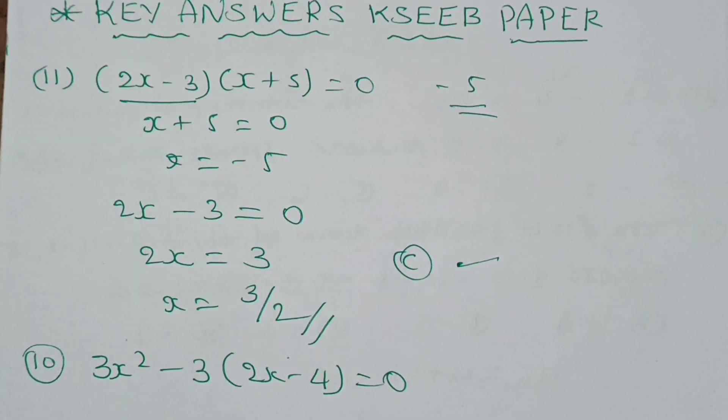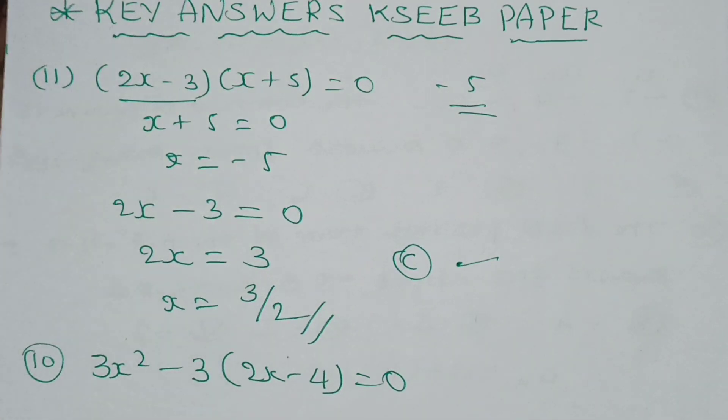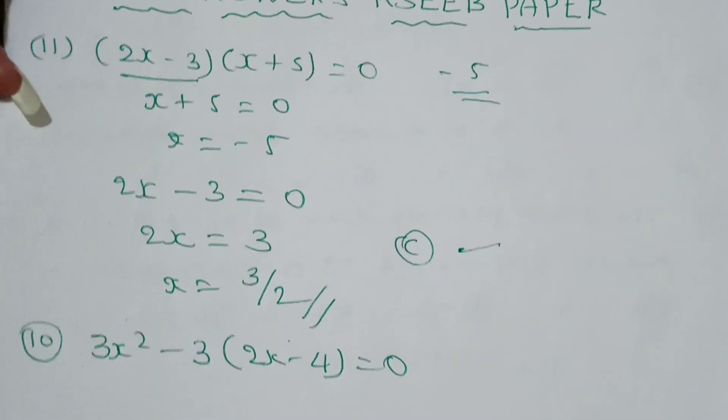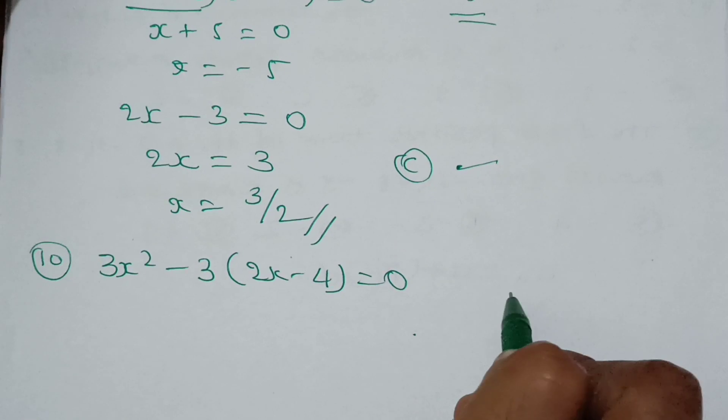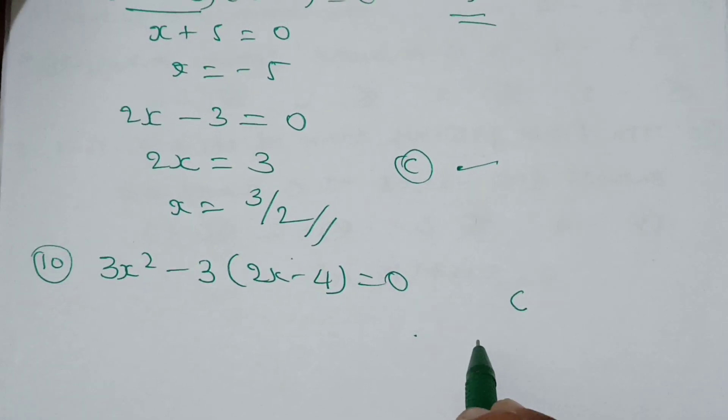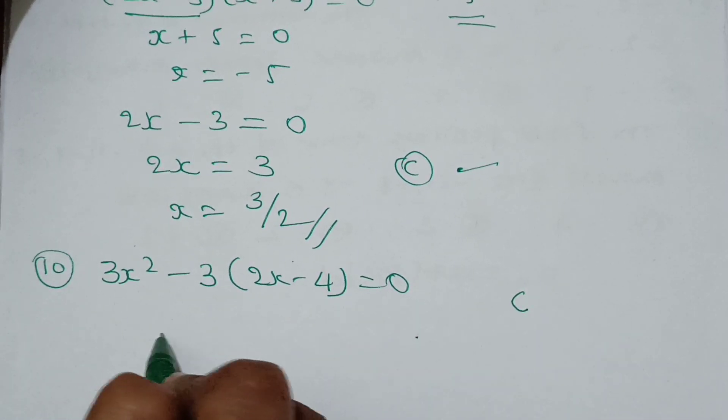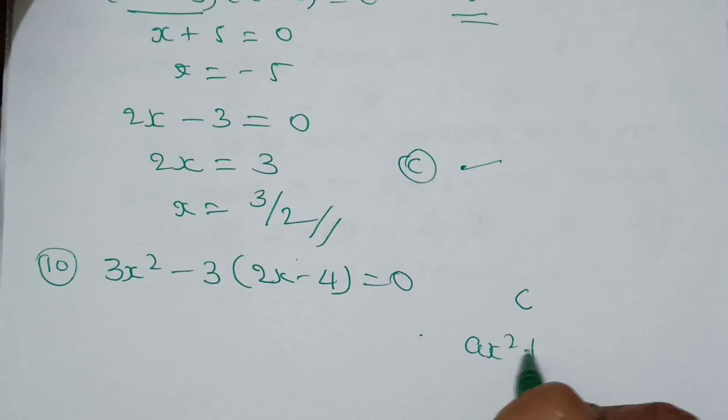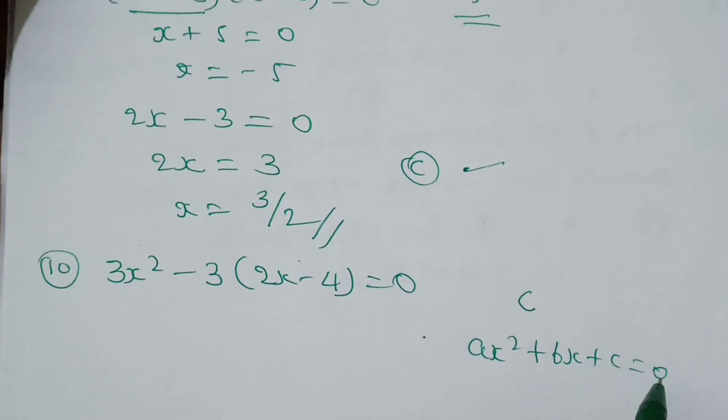You need to find the value of the constant, which means you need to find the value of c. The standard form is ax squared plus bx plus c equals to 0, right?